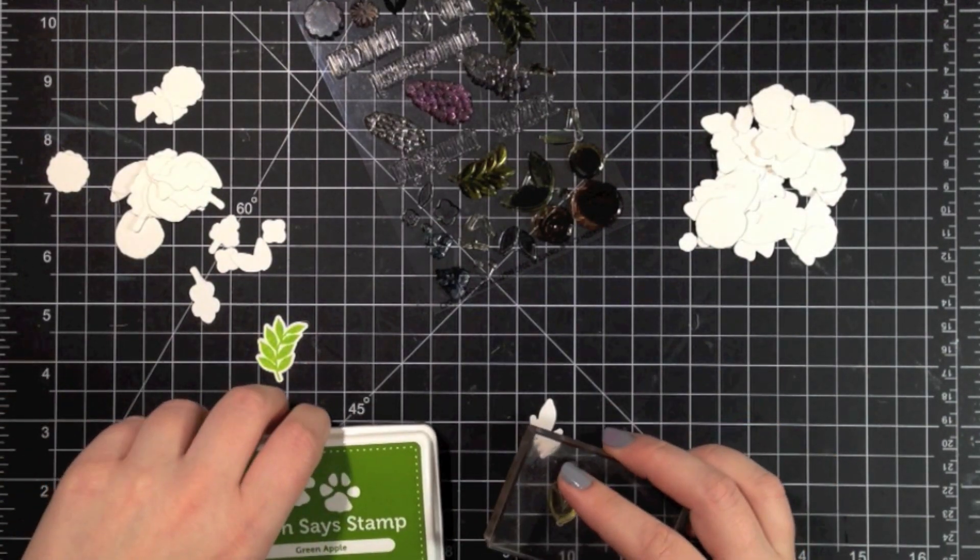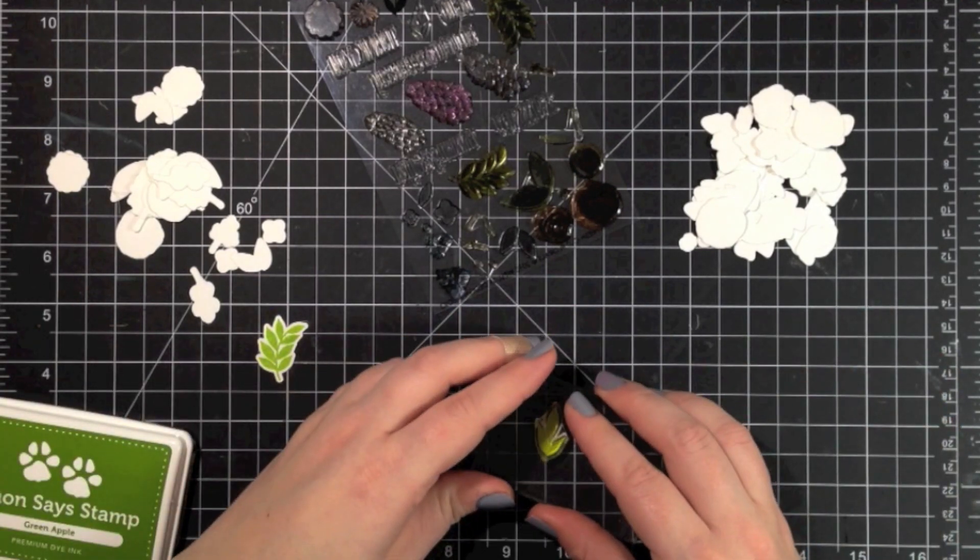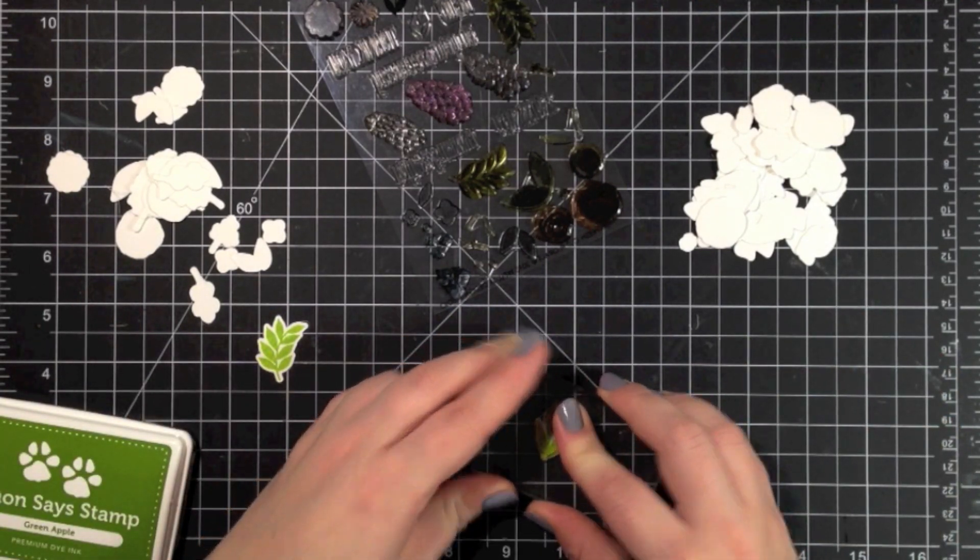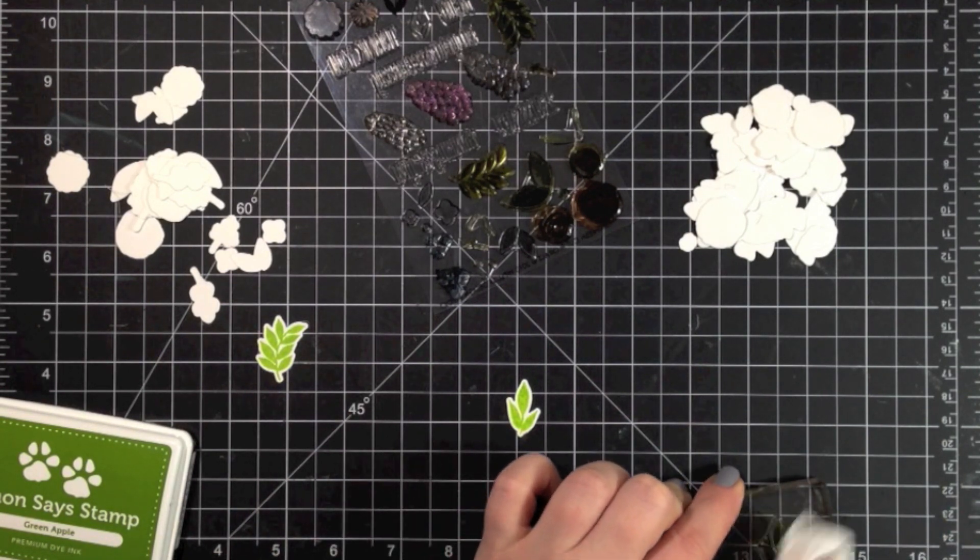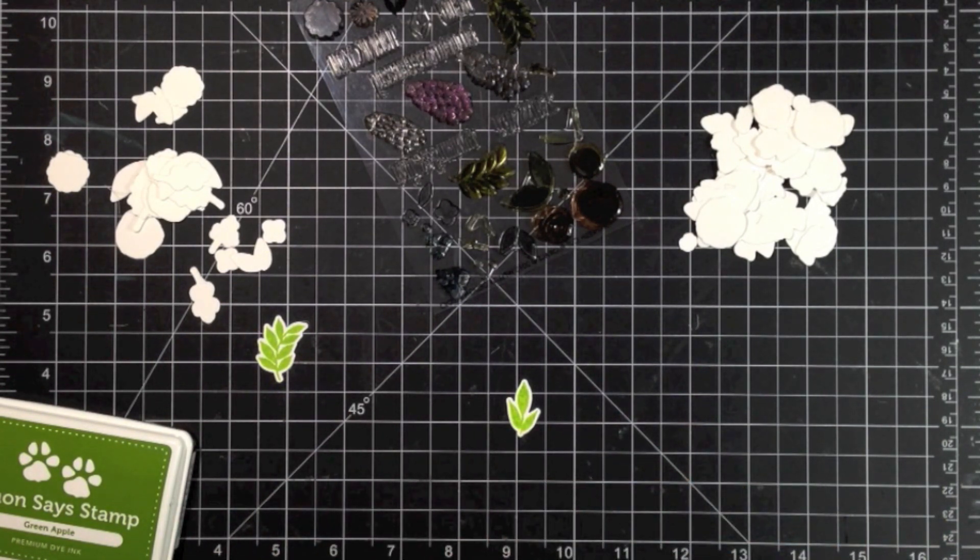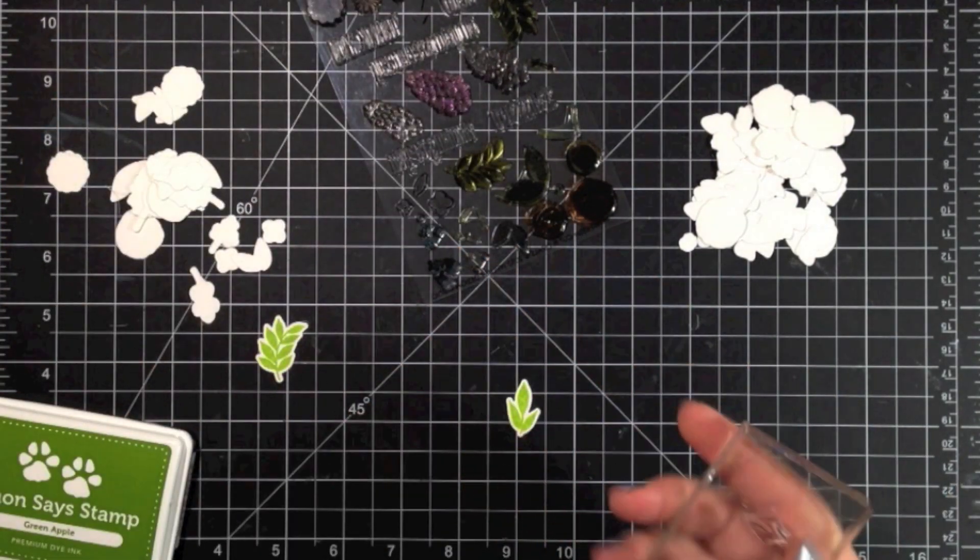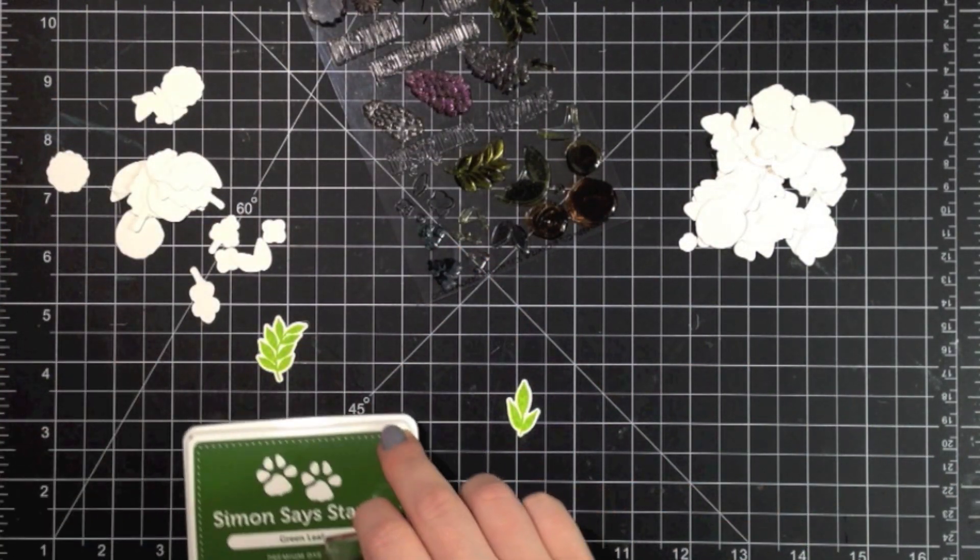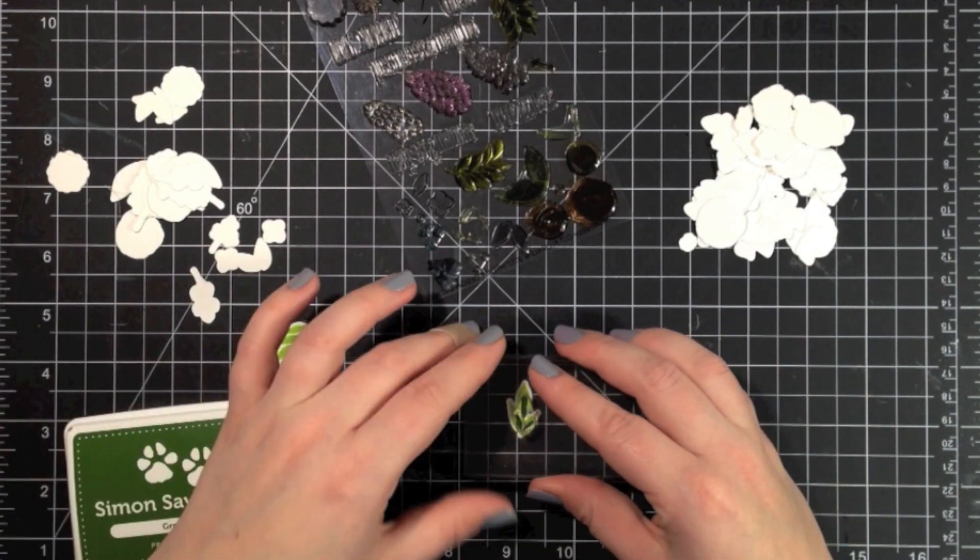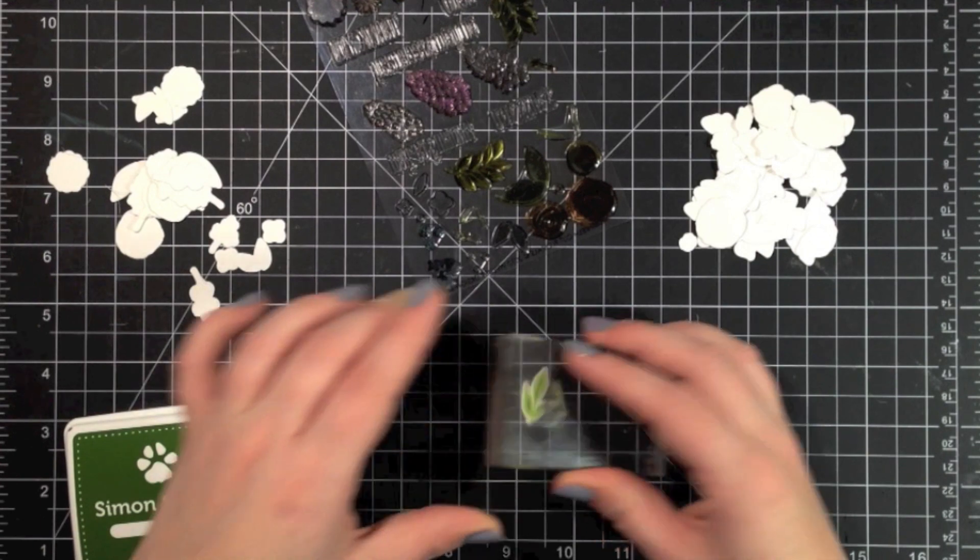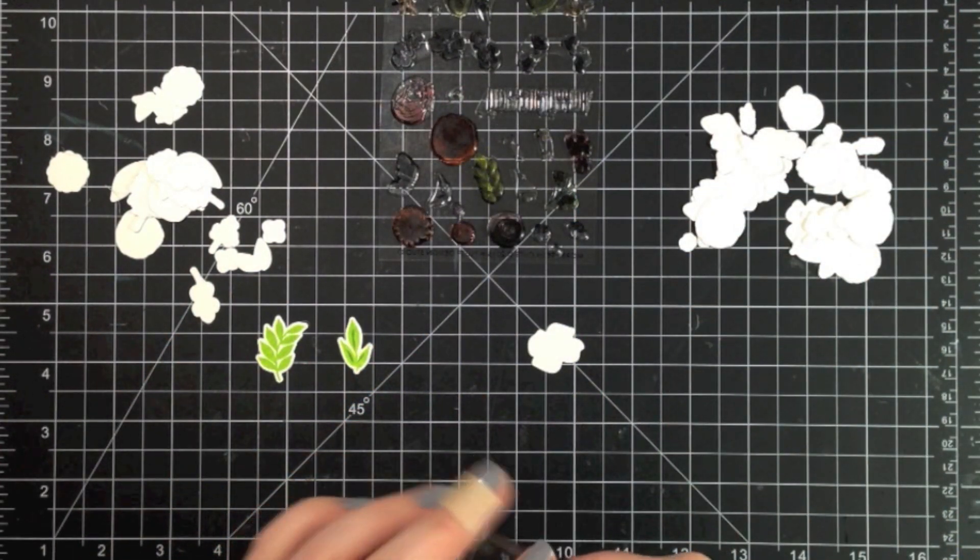The second one here is a two-step stamp, so you're going to do the base part first. I did that in green apple ink from Simon Says Stamp. Then there's another companion stamp that goes with this one that allows you to stamp the vine area of those three leaves there. So I just used a darker ink, the green leaf from Simon Says Stamp as well, and stamped those over top. You can see there that you get that great detail on those leaves.